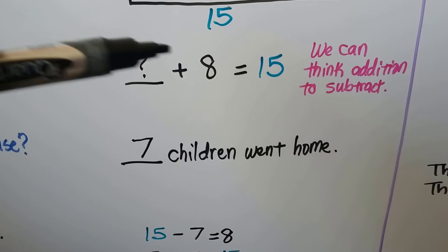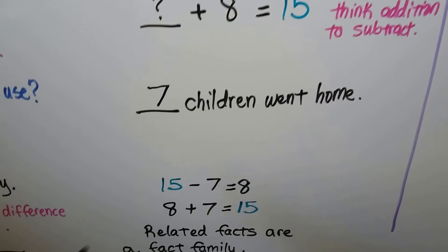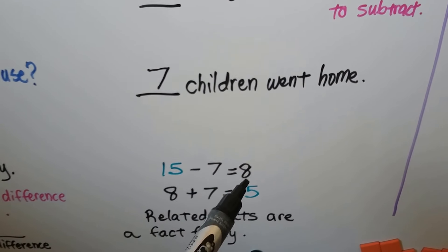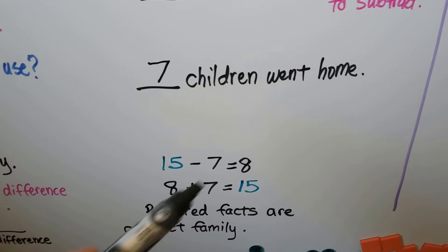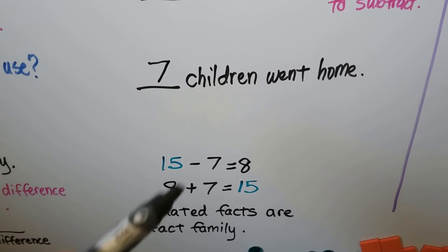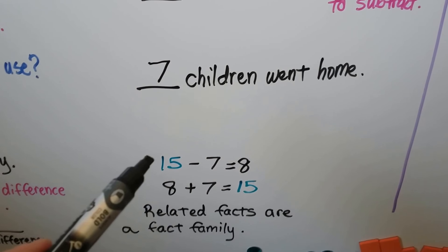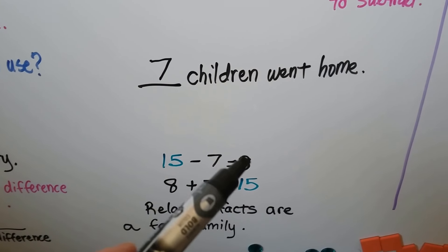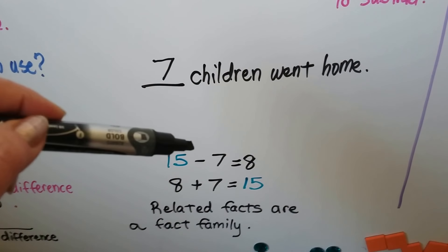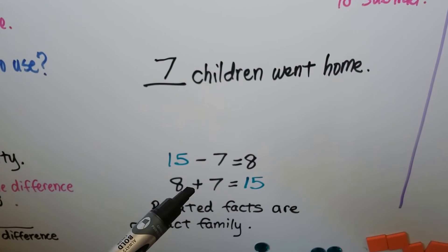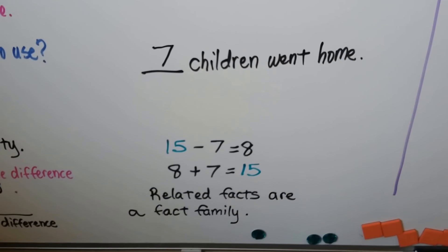7 plus 8 is equal to 15. 15 minus 7 is equal to 8. 8 plus 7 is equal to 15. These are related facts and they're a fact family. We have three numbers: a 15, a 7, and an 8. Even though one is a subtraction problem and another is an addition problem, they have related facts.